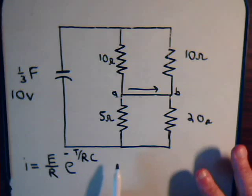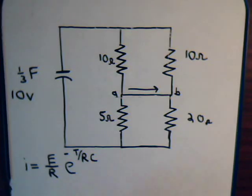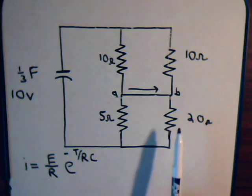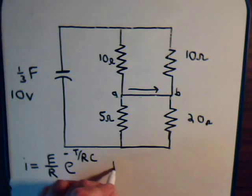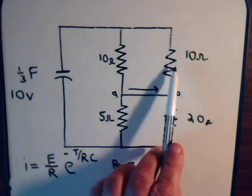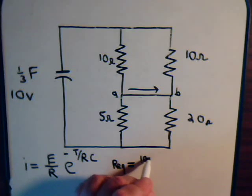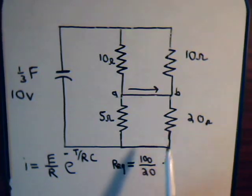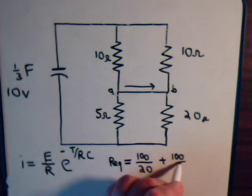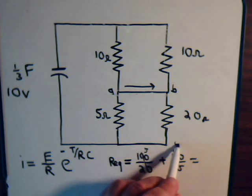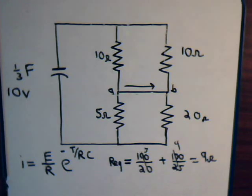What we do have to do is determine the total resistance for this circuit. We have two resistors in parallel, and then another parallel pair of resistors. So the equivalent resistance R_eq equals, for the first pair, their product 10 times 10 equals 100, divided by their sum 20 — that's 5. For the second pair, product 100 divided by sum 25 — that's 4. So we have 9 ohms as our equivalent resistance.